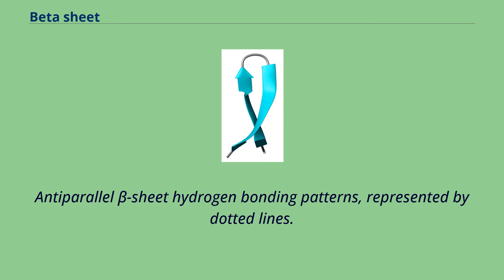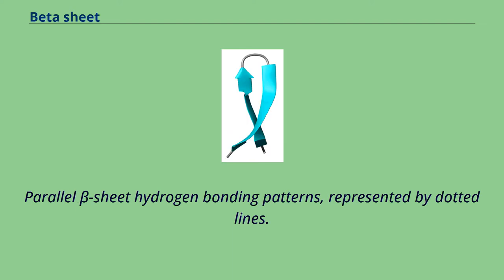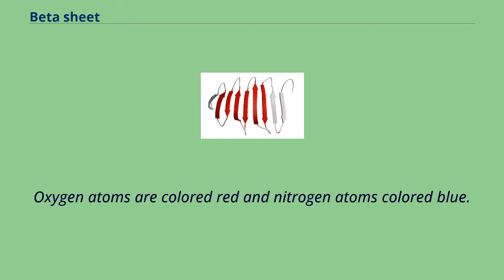Anti-parallel beta sheet hydrogen bonding patterns represented by dotted lines. Oxygen atoms are colored red and nitrogen atoms colored blue. Parallel beta sheet hydrogen bonding patterns represented by dotted lines. Oxygen atoms are colored red and nitrogen atoms colored blue.